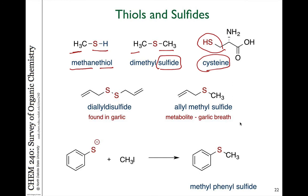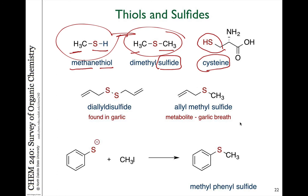Some of these sulfur compounds are very pungent and very strong. For example, methane thiol and dimethyl sulfide are added to natural gas to make it smell so that you can detect gas leaks. Propane and methane are odorless, so in order to provide some odor to them so that we can detect an unsafe gas leak, these smelly compounds are added to natural gas.